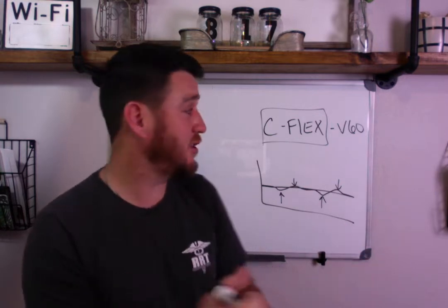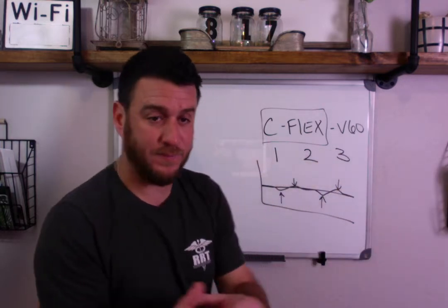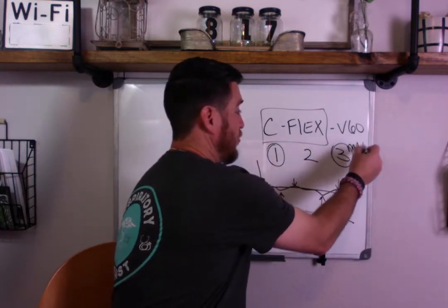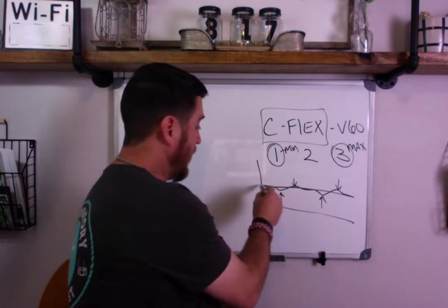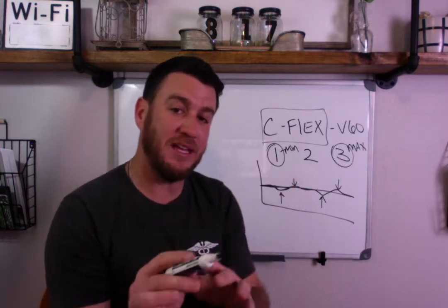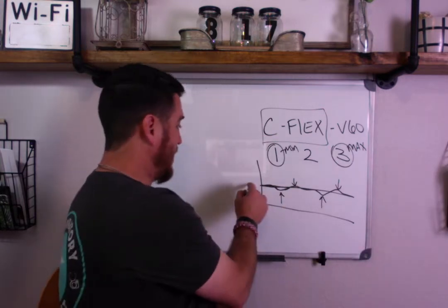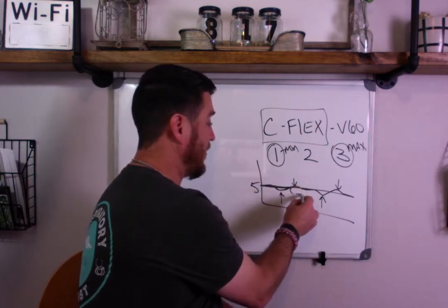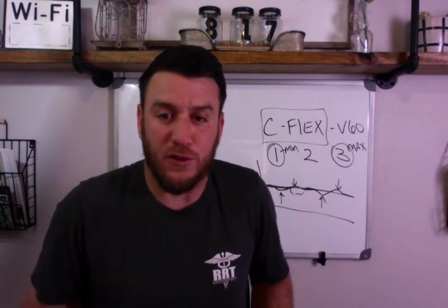C-Flex allows you to choose between settings of one, two, or three. One is the minimum, three is the max. On C-Flex, as inhalation ends and exhalation begins, you're actually going to get a drop in the CPAP pressure. So if you're on a CPAP of five, the pressure during exhalation is actually going to dip down and then come back up. The reason it does that is to make it easier for the patient to exhale so they don't feel like they're breathing against all that pressure.